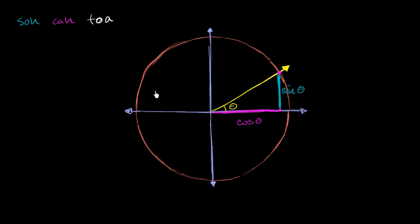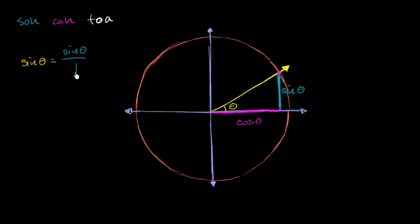If I think about the sine of theta by the SOHCAHTOA definition, it's going to be equal to the length of the opposite side — we're saying that that's sine of theta — over the hypotenuse. Well, the hypotenuse here, this is a unit circle, so it's going to be one. So this shows that this is consistent.